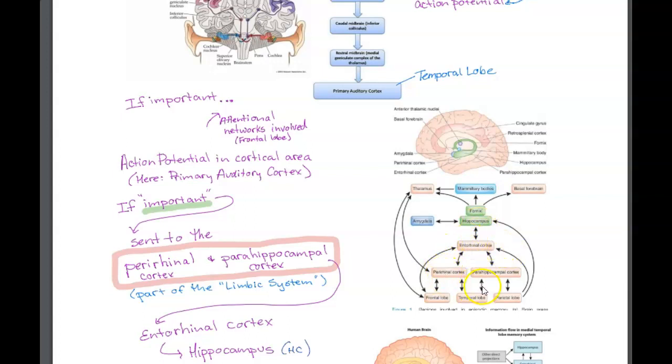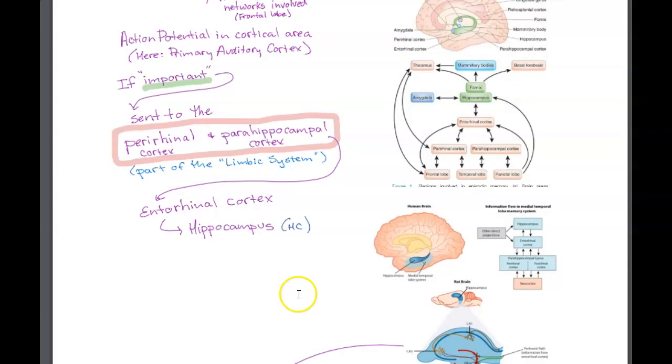You can see here it's a complicated network. Once we get to the hippocampus, then we're going to see what happens there. This is kind of a repeat of what I just said with a little bit more simplification of that information going to these two different areas of the cortex, and then eventually going to the hippocampus. There we have the hippocampus.